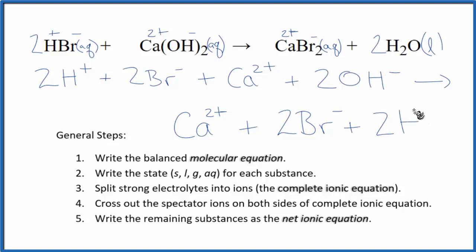In net ionic equations, we do not split liquids apart into their ions, so we're going to keep that together. That gives us the complete ionic equation. Now we can cross out spectator ions. They're on both sides. They don't change, so we're not interested in them in our net ionic equation.